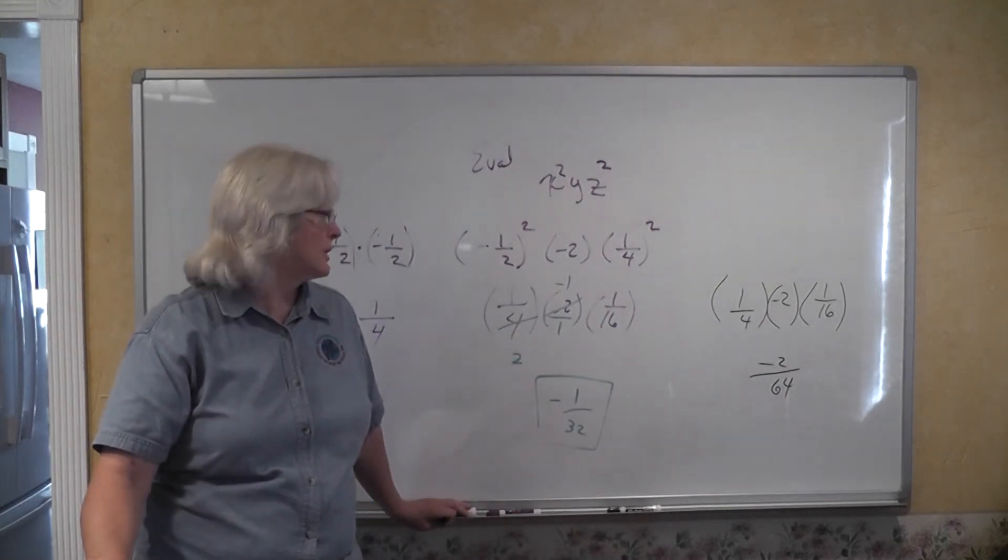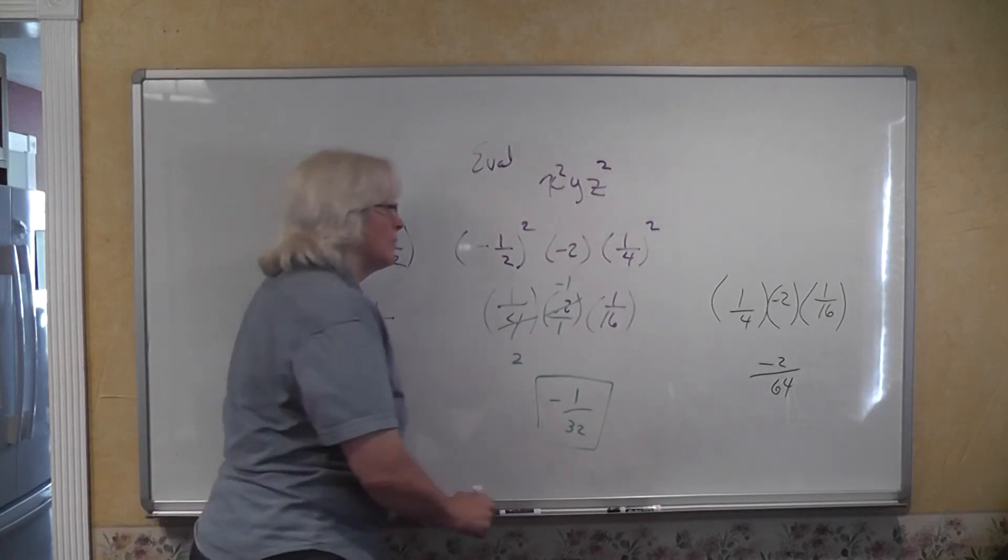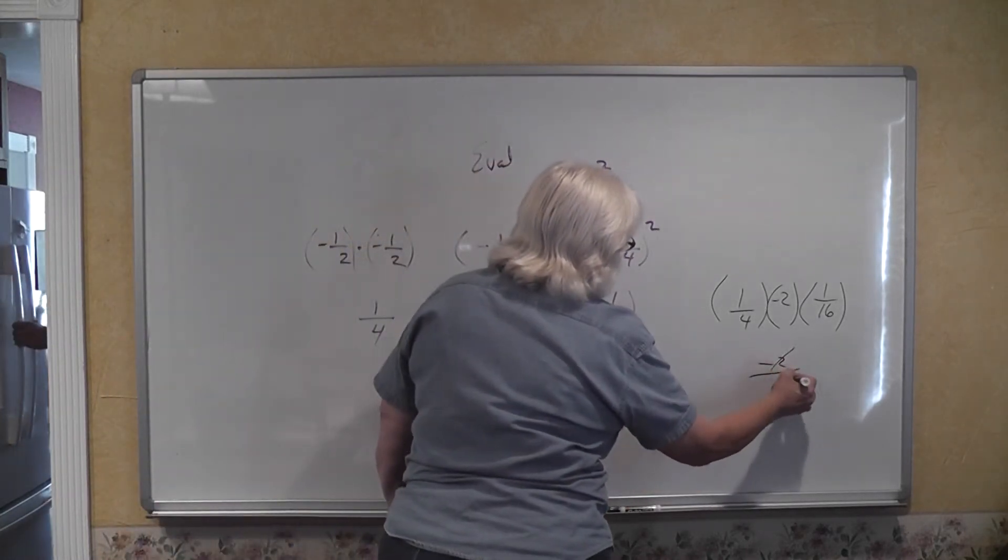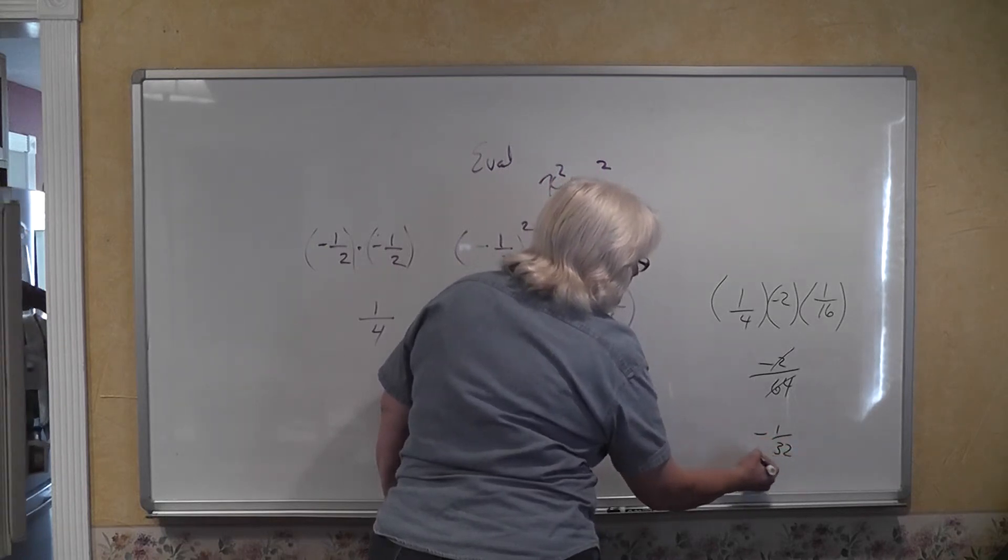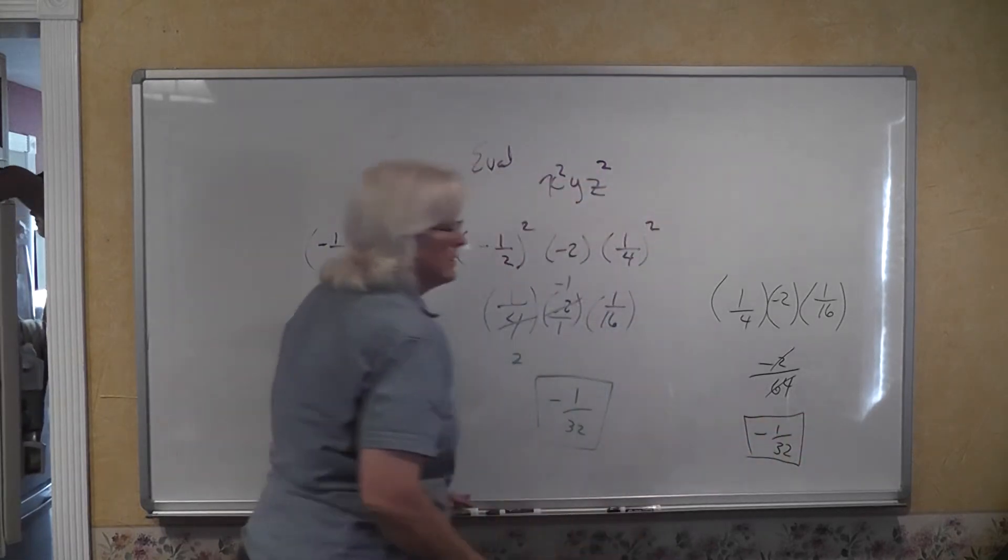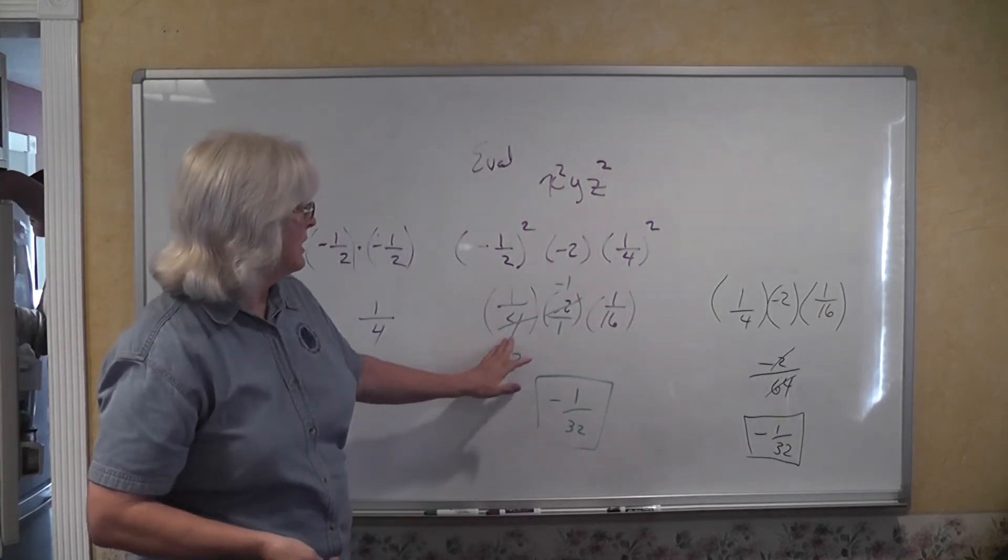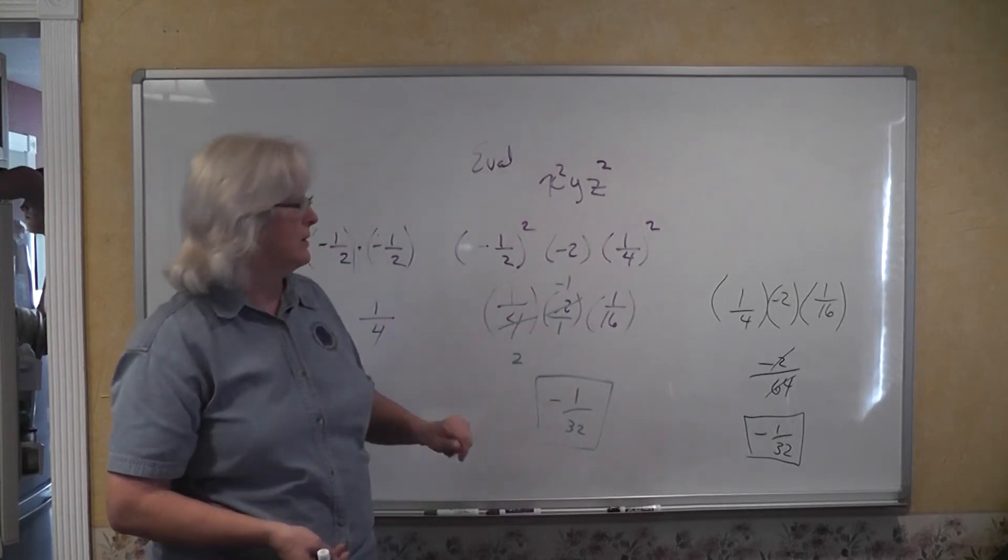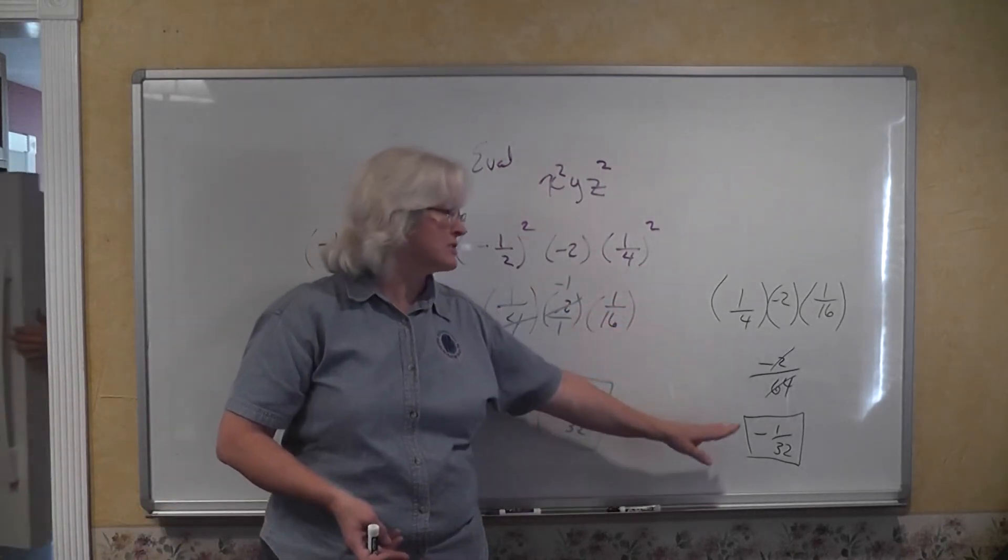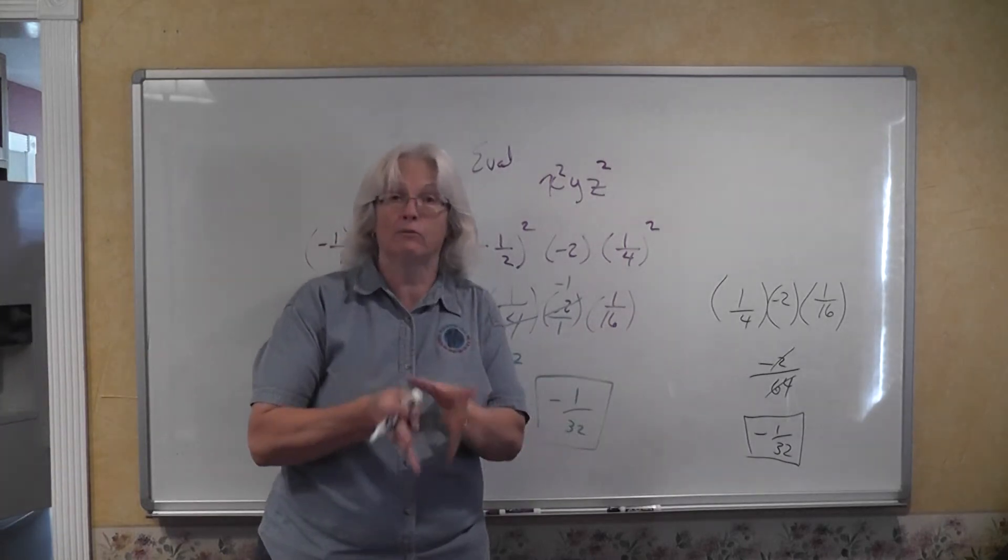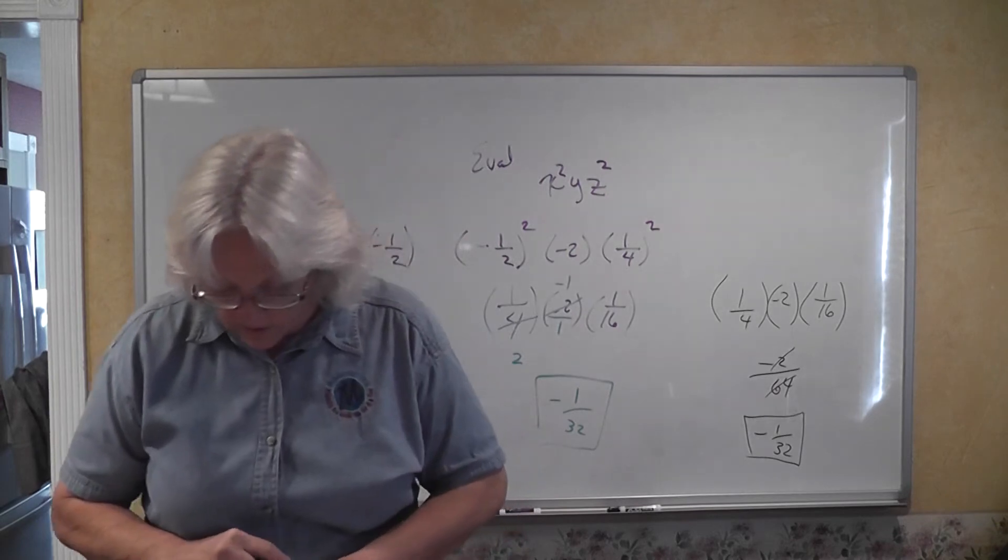Multiply numerators together. 1 times negative 2 times 1 is negative 2 over 4 times 16 is 64. So now you have to reduce with the larger number. You have a factor of 2 in common. When you cancel out that factor of 2 you end up with negative 1 over 32. It makes no difference which approach you take. You can cancel common factors before you multiply. You can multiply numerators and denominators out first and then cancel after.